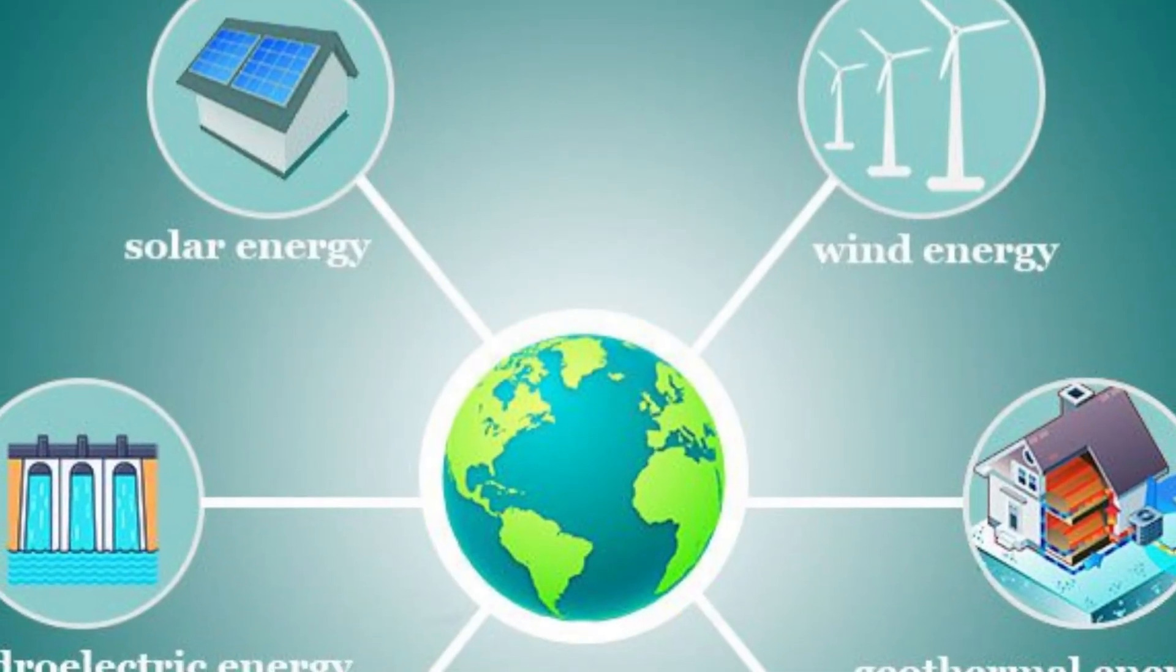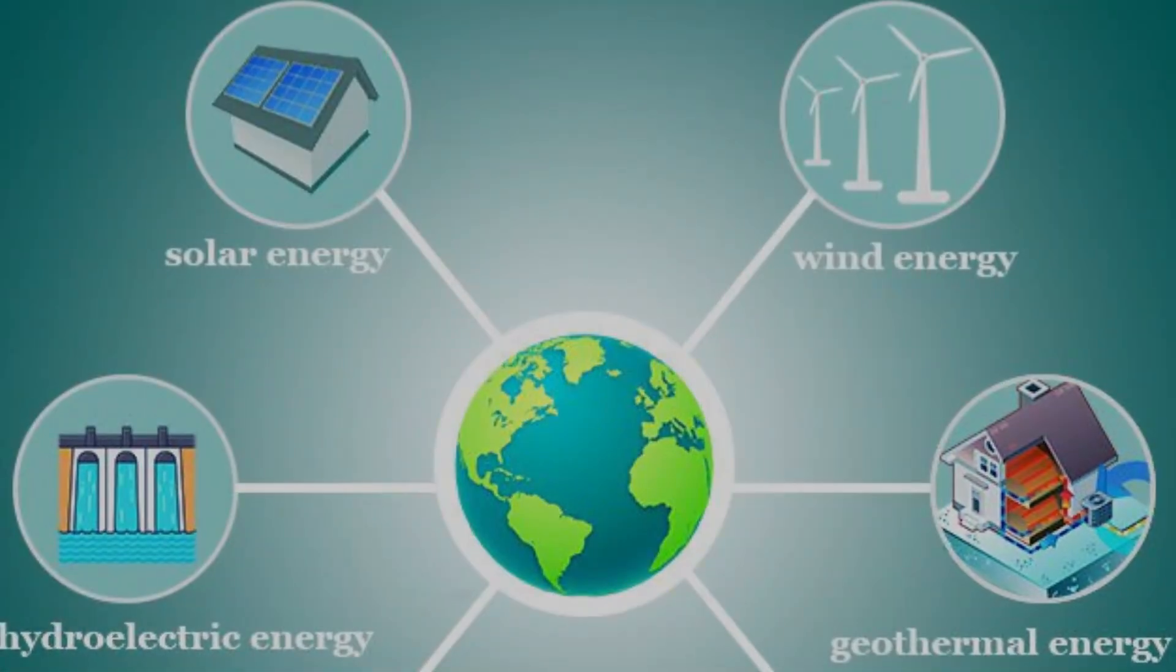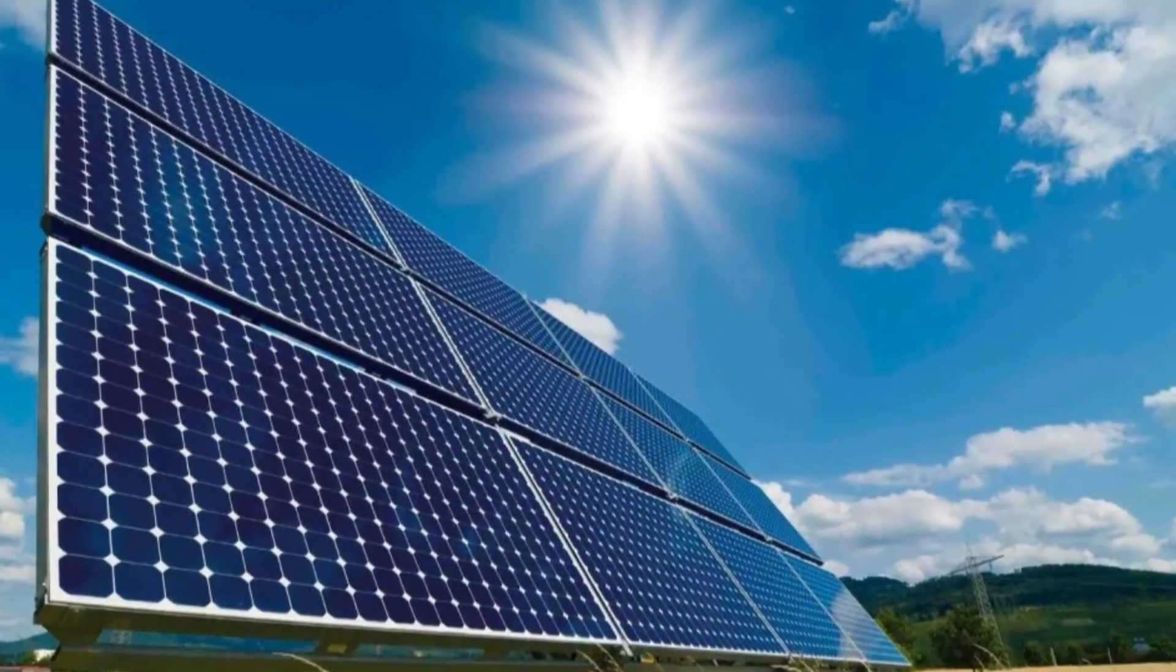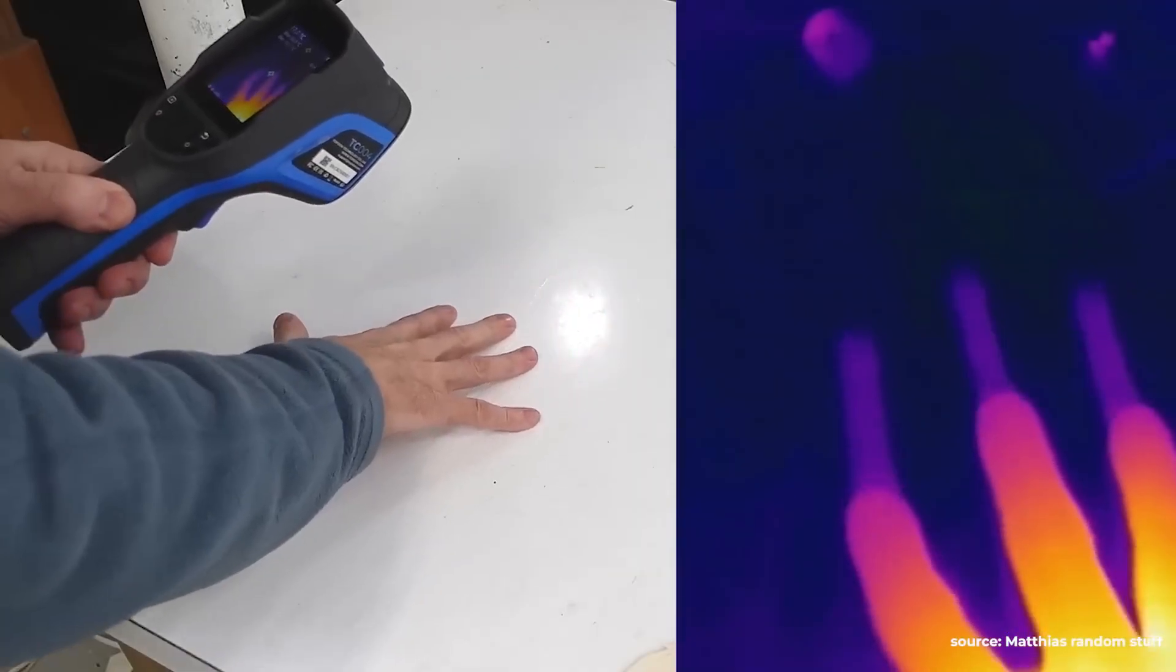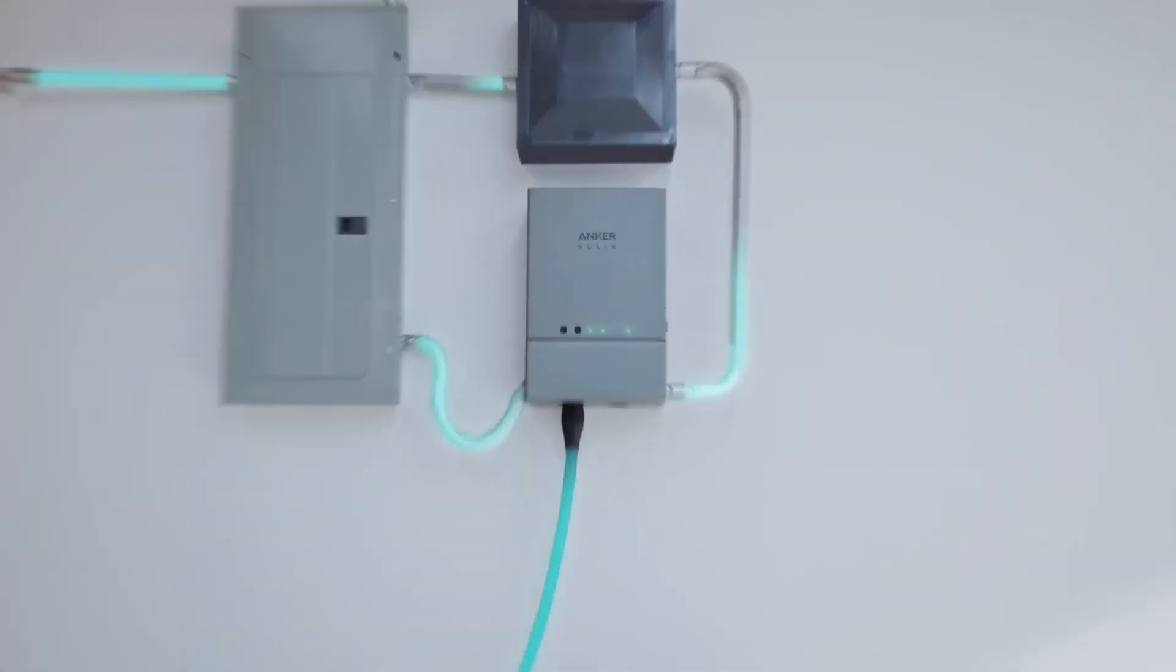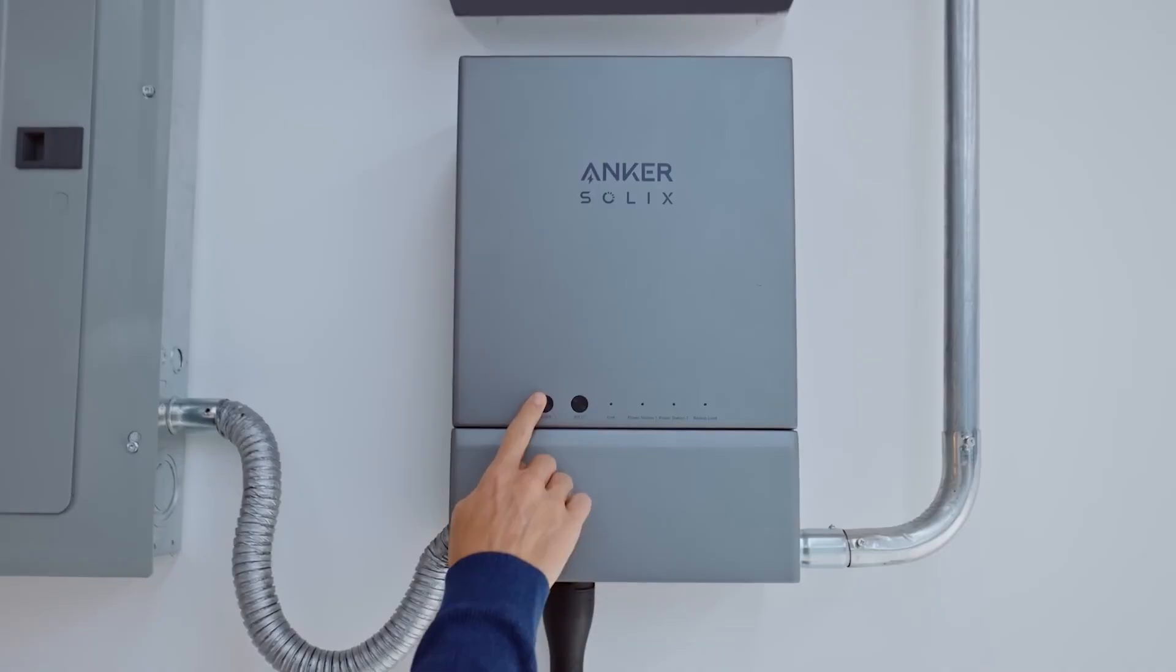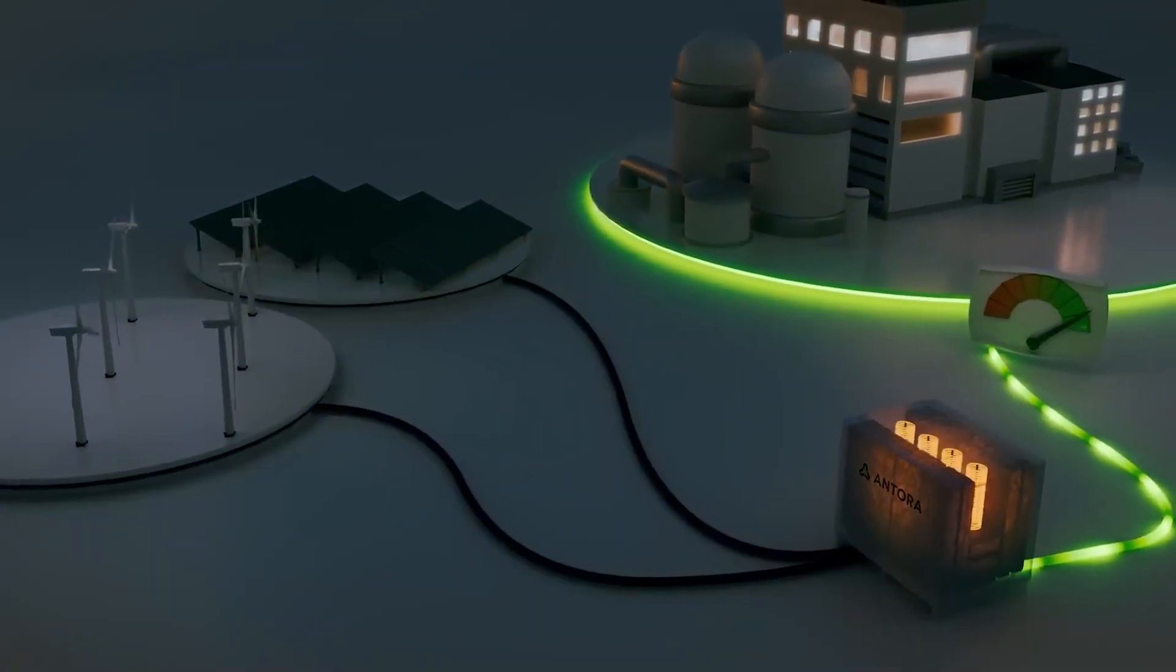We already know that renewable energy is a major part of the global energy transition, and solar power plays a central role. In Germany, by 2024, solar electricity made up around 14.7% of total gross power generation, and that number keeps climbing every year.